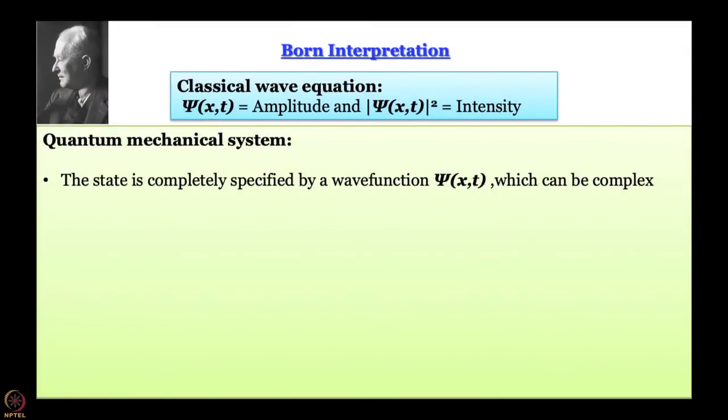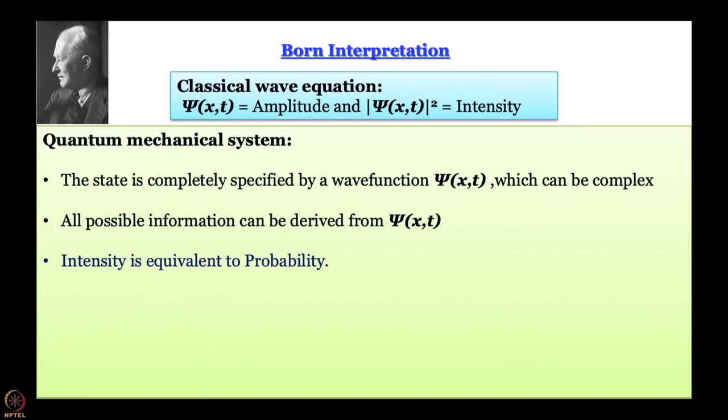Think of sound waves or light — for electromagnetic waves, the square of displacement has to do with intensity. So what Born said is that mod squared of ψ, obtained from the Schrödinger equation, must have to do with the intensity of the de Broglie wave or matter. What is the meaning of intensity of matter? That is what leads to a very powerful tool. The state is completely specified by the wave function ψ, which may be complex, and Born interpreted this intensity as something to do with probability.